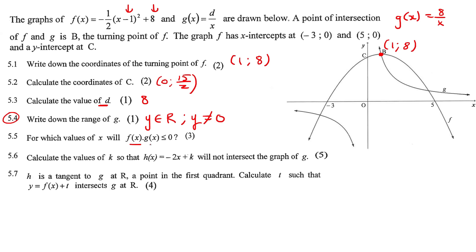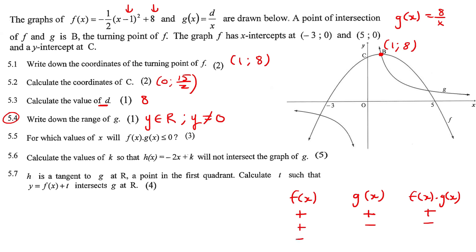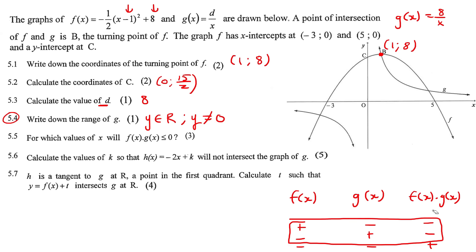For which values of x will f(x)·g(x) < 0? When you get a question like this, make a little table with f(x) and g(x). If both are positive, the product is positive. If one is positive and one is negative, the product is negative. If both are negative, the product is positive. We want the product smaller than 0, so we're looking for the two situations where exactly one of them is negative.